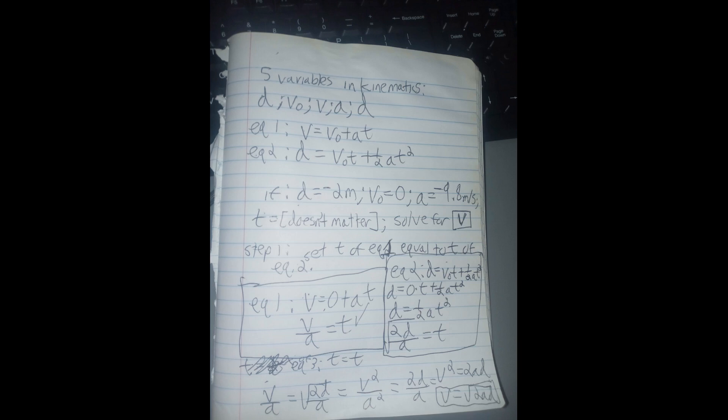So we get displacement equals zero plus one-half at squared. Or displacement equals one-half at squared. We solve for t by first getting t squared in isolation on one side of the equation. And we do that by multiplying by two because I'll get rid of the one-half factor. And divided by a because I'll get rid of the a. So we get 2d divided by a equals t squared.